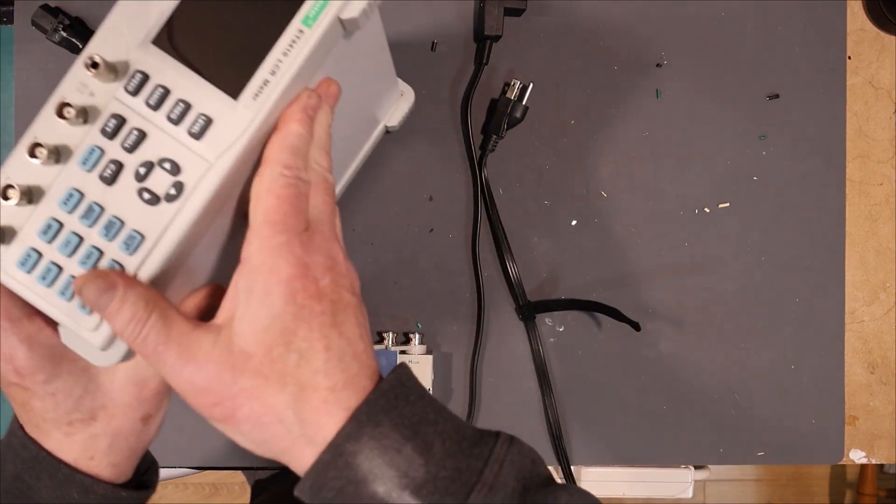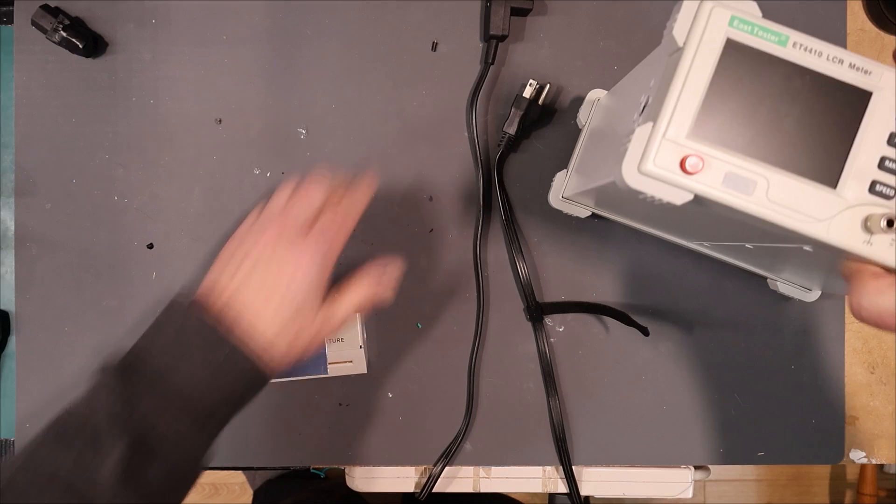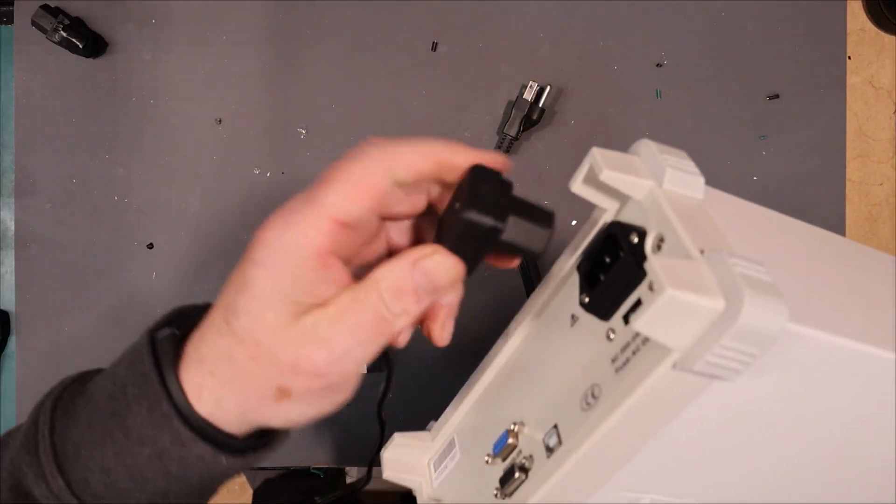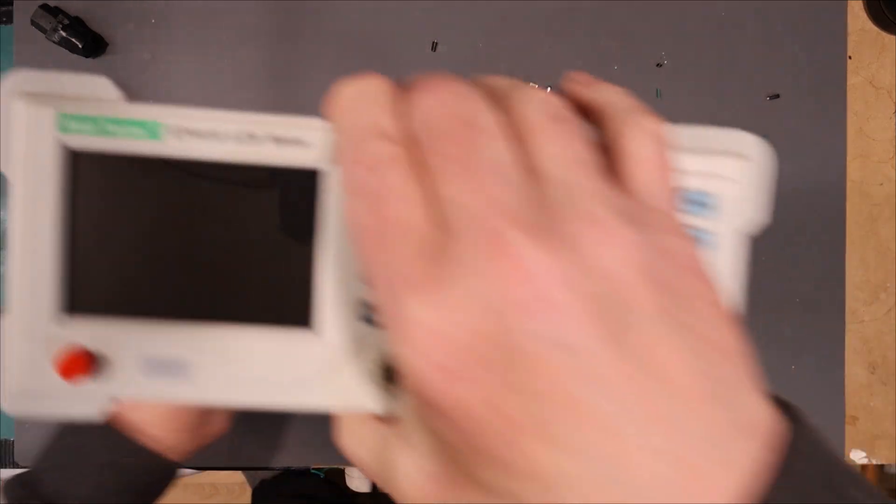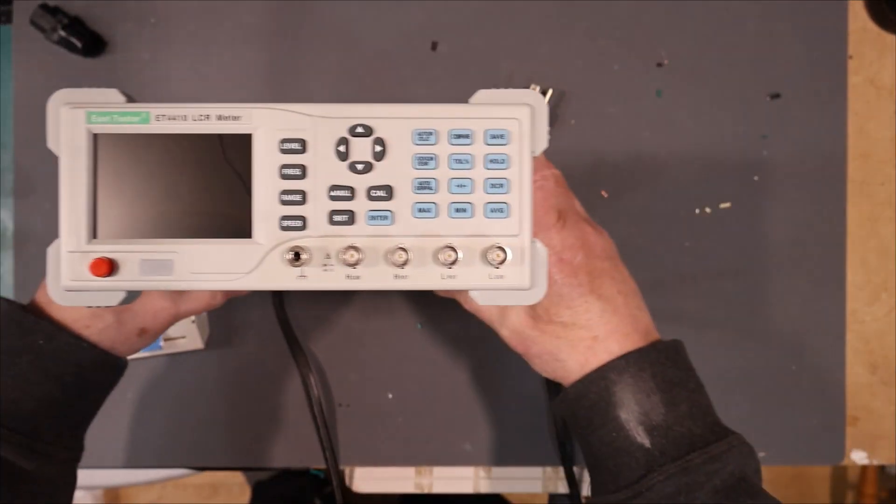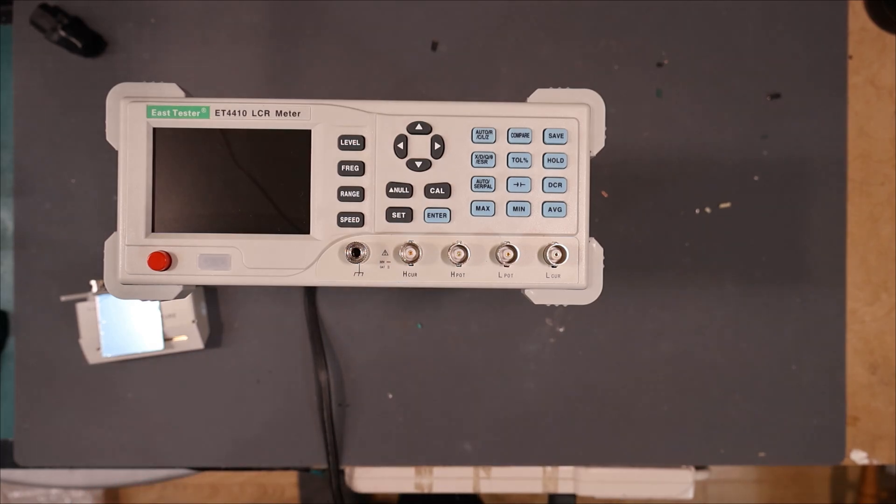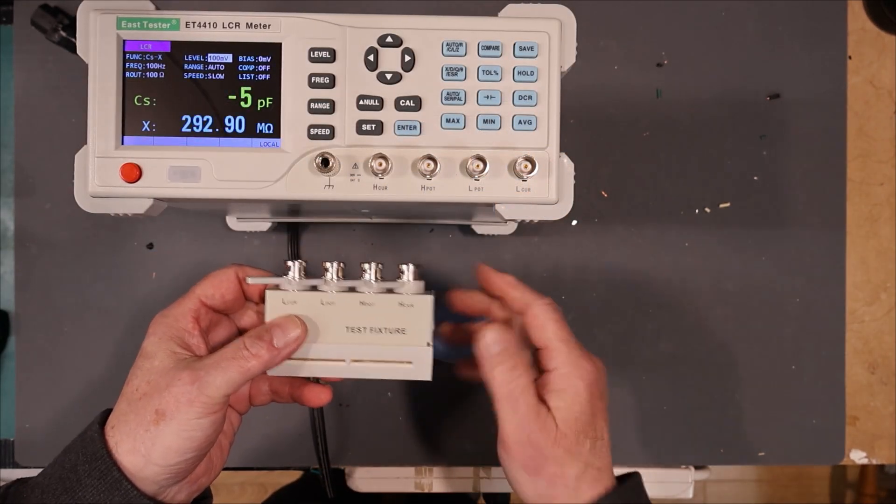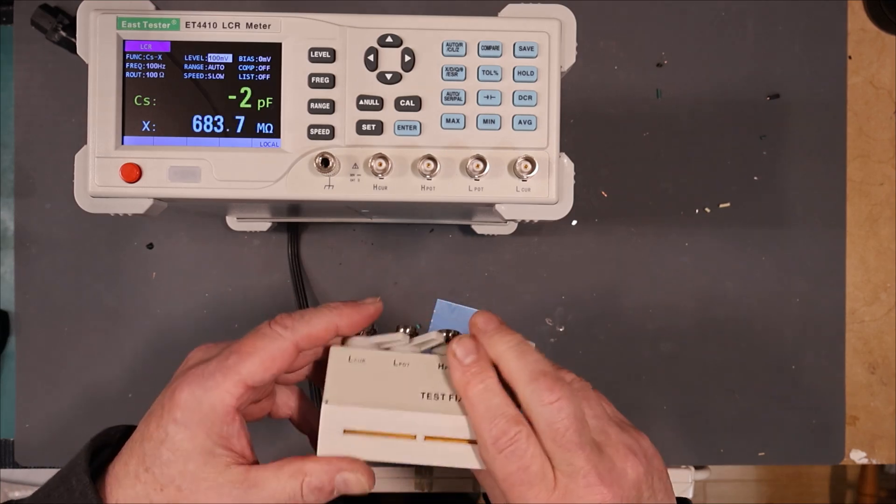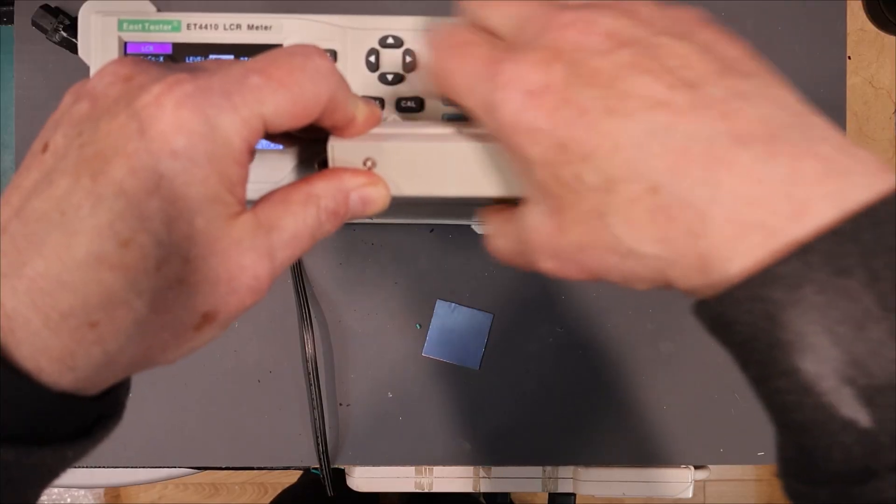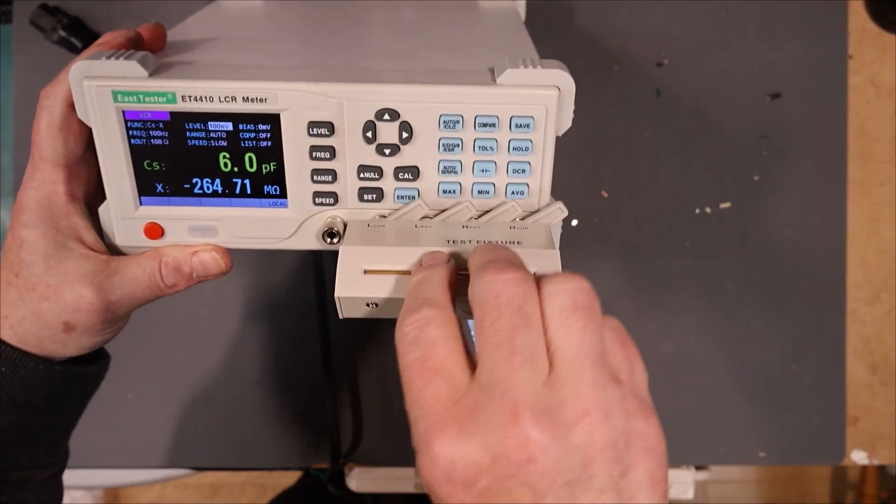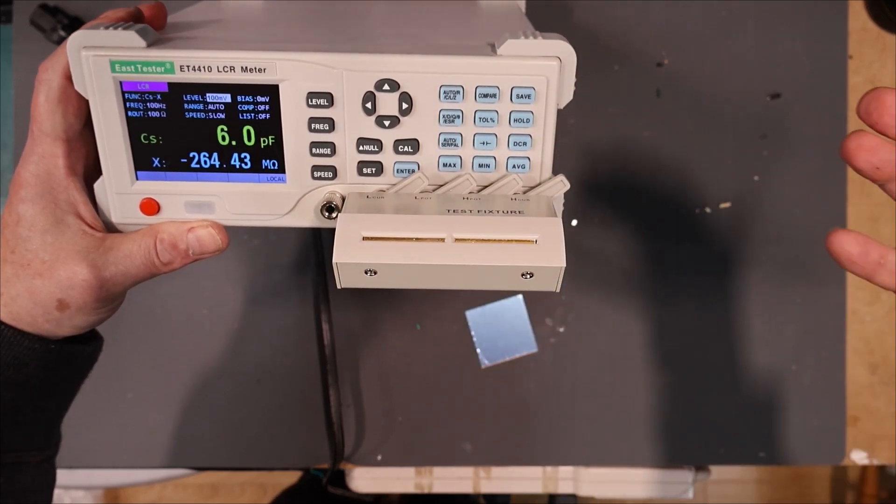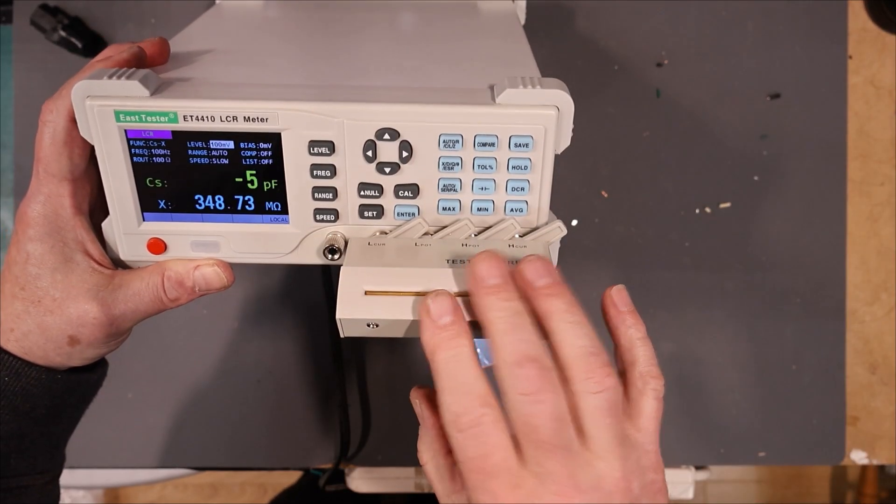For our next mini project, we're going to need the East Tester ET4410. And this will also be a nice demonstration of the advantage of these right-angle connectors. Nice tight fit. Yeah, now you can see how I can just stand this up on the rear projections. Perfect. Okay, this project has to do with this component fixture I got for the ET4410. This just attaches onto the BNC-Kelvin connections on the front here. And it allows you to directly attach leaded components without the need to drag out a big set of Kelvin cables.